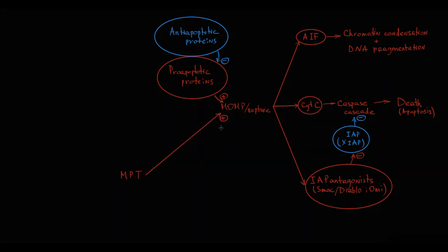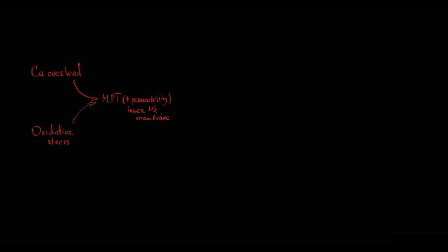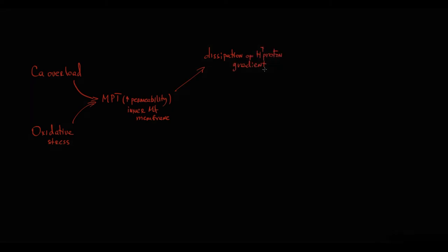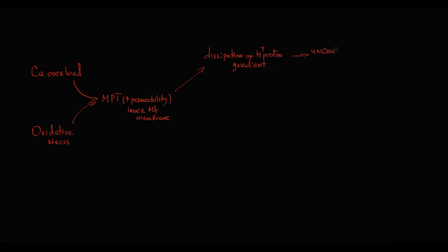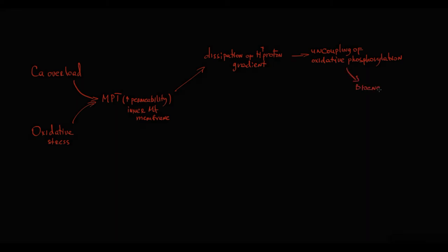There is a separate video about MPT, so here we will cover just the general concept. There are two major intracellular states that induce mitochondrial permeability transition: calcium overload and oxidative stress. They both cause increased permeability of the inner mitochondrial membrane, resulting in two major pathological states. First, it causes dissipation of the hydrogen ion gradient across the inner mitochondrial membrane, resulting in uncoupling of oxidative phosphorylation, so mitochondria cannot efficiently produce energy — leading to bioenergetic failure of the cell.